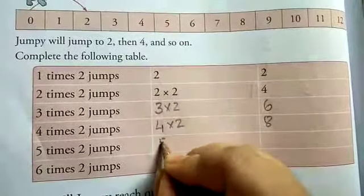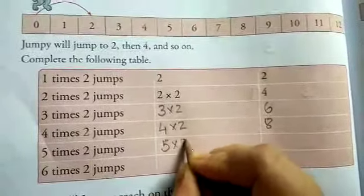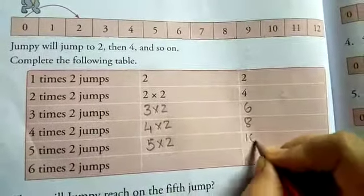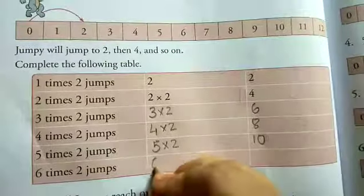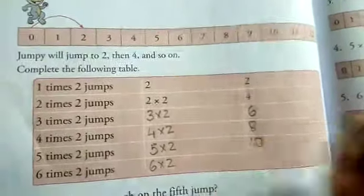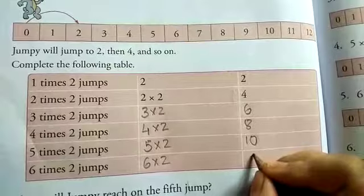jumps: 5 into 2, 5 times 2 is 10. 6 times 2 jumps: 6 into 2, 6 times 2 is 12.